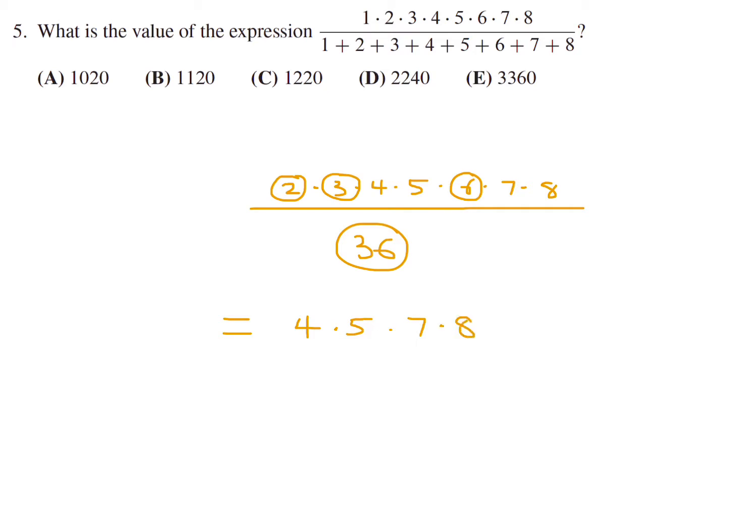And the only thing you're left with is 4 times 5 times 7 times 8. And when you do that multiplication, you get 1,120. So the answer is B.